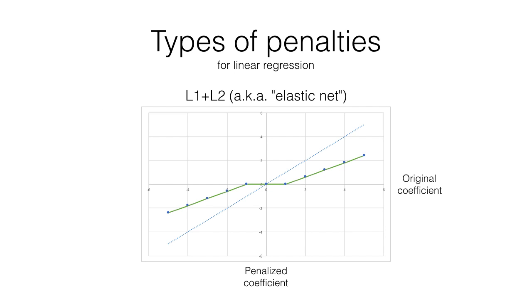An additional option is to add more than one kind of penalty to a model. Adding both L1 and L2 penalties is a method called elastic net regularization. This combines the increased penalty on large coefficients of ridge regression with the removal of low-coefficient features in LASSO. As you can see in the plot, the slope of the line is made somewhat more shallow, and the smaller magnitude coefficients are decreased to zero.